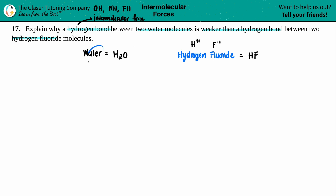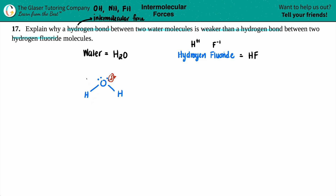When dealing with water, if I draw the Lewis structure, I have oxygen with a single bond to both hydrogens and two lone pairs. We see that we have an OH bond, which means water can form a hydrogen bond. The more electronegative element is always going to be the partial negative. Since oxygen is more electronegative than hydrogen, oxygen is the partial negative and the hydrogens are partial positive because they are less electronegative than oxygen.